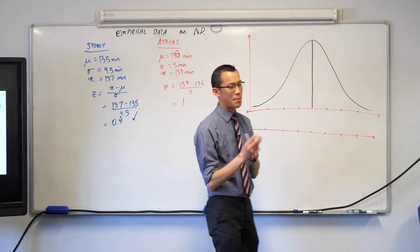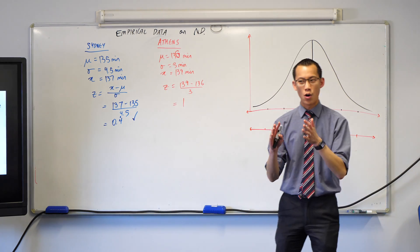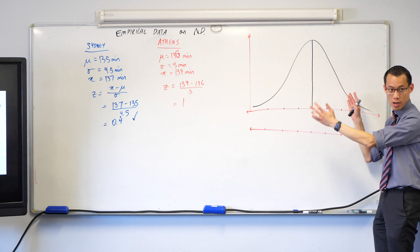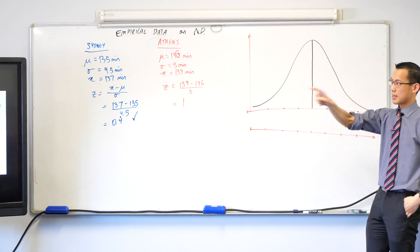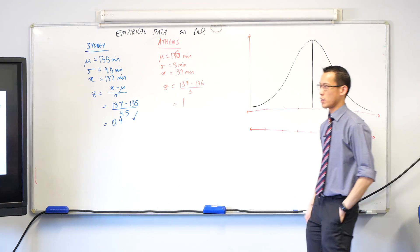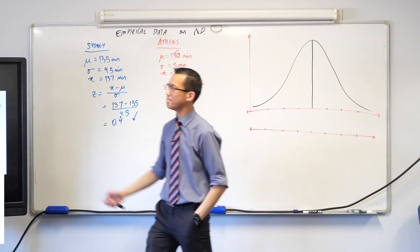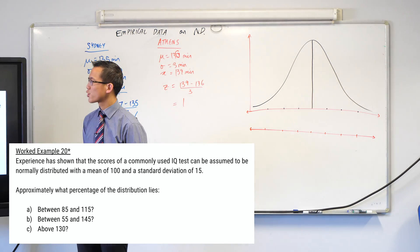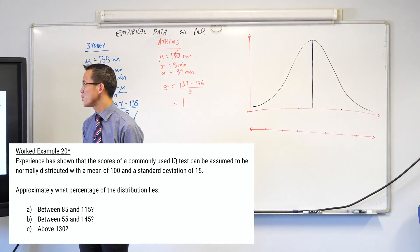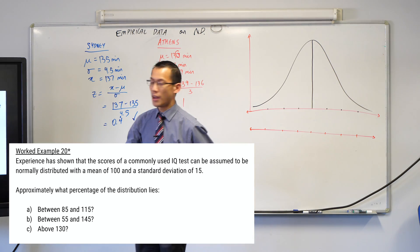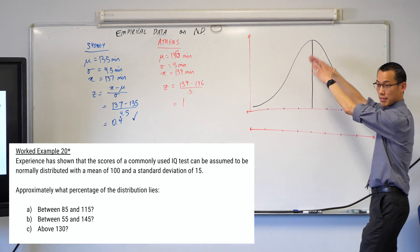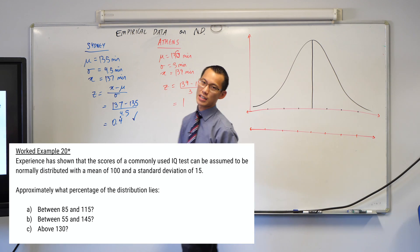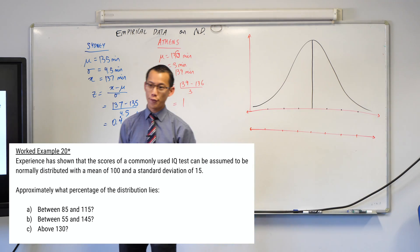Hopefully by now you are most of the way or done drawing a normal distribution curve. We're going to use this to answer this question. It says: experience has shown that the scores of a commonly used IQ test can be assumed to be normally distributed, with a mean of 100 and a standard deviation of 15.